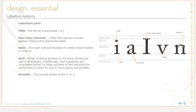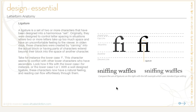The shoulder is the curved stroke on a lowercase h, m, or n. A ligature is two or more characters that have been combined into a harmonious set. Originally, they were designed to control letter spacing in situations where two or more letters take up too much space and have an uncomfortable feeling to the viewer. In olden days, these characters were created by carving into the actual wood block or having parts of the characters extend beyond their block into the space of another character.